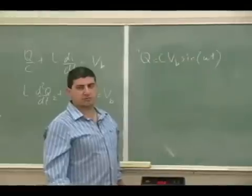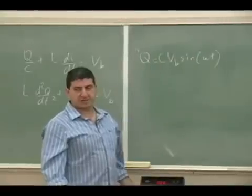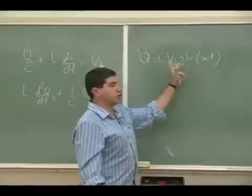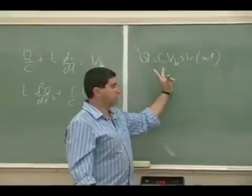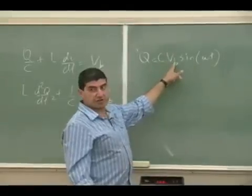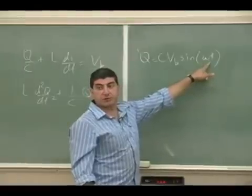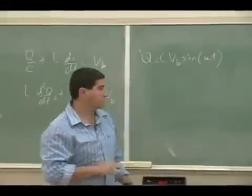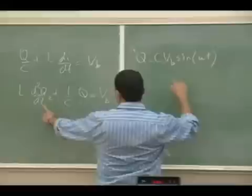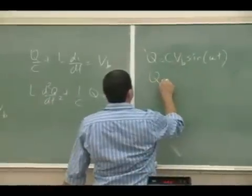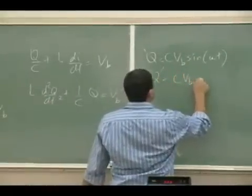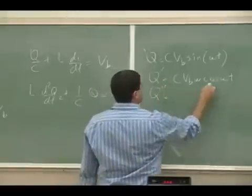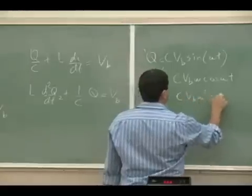We know the sine function satisfies the equation, we've set the initial charge to zero, and we know Q_max equals C times V_B. The remaining unknown is omega — the rate at which they transfer energy to each other. To find it, we take the second derivative of Q. The first derivative gives C*V_B*omega*cosine(omega*t), and the second derivative gives negative C*V_B*omega² times sine(omega*t).